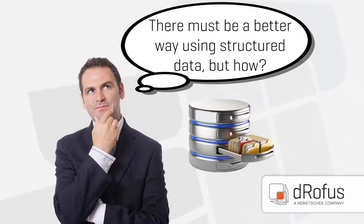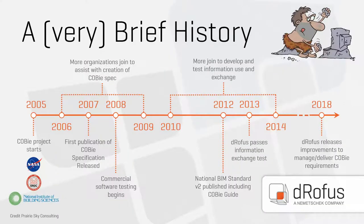According to Bill East at Prairie Sky Consulting, the COBE Project started by asking two questions around how data could replace the traditional mess. The first question was: what do we need to know about our buildings — what assets to maintain, what information we need, and how to find them. The second question was: in what format should information be delivered? They decided to use XML as the language format, mostly because it's an open standard that emphasizes simplicity and is human-readable in Excel.